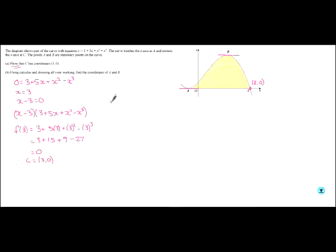So, let's find dy by dx. It's a nice one. It's got no fractions or anything in it. So, if we differentiate this, we're going to have 5 plus 2x minus 3x squared. And we can put that equal to 0 because the gradients at those two stationary points are 0.